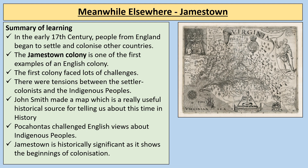A summary of our learning about Jamestown: In the early 17th century, people from England began to settle and colonise other countries — the Jamestown colony is one of the first examples of an English colony. The first colony faced lots of challenges, with tensions between settler colonists and indigenous peoples. John Smith made a map which is a really useful historical source. Pocahontas challenged English views about indigenous peoples. Jamestown is historically significant as it shows the beginning of colonisation.